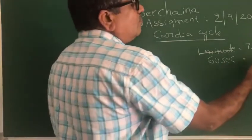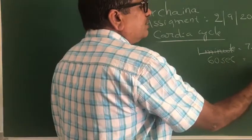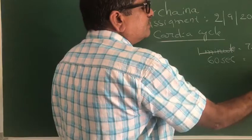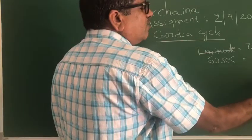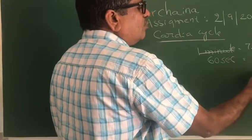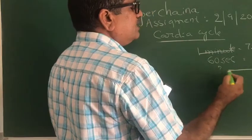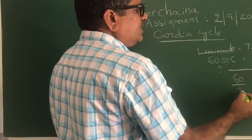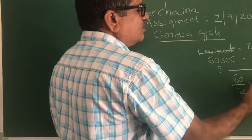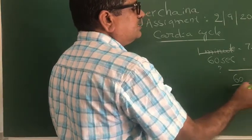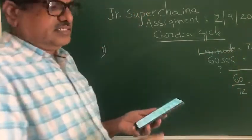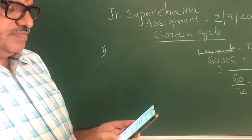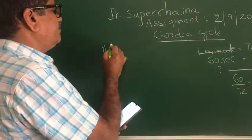For one beat — because one beat corresponds to one cardiac cycle — how much time will it take? This is 60 divided by 72, which equals 0.8 seconds. So the answer to question one is 0.8 seconds.